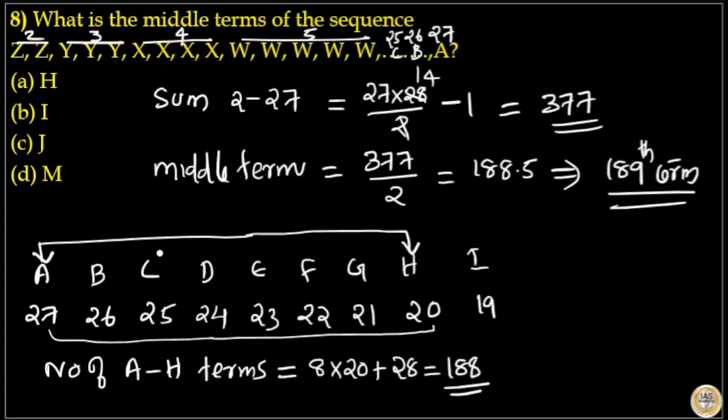So that equals 188. So we have total 188 terms from A to H. That means I is the 189th term.